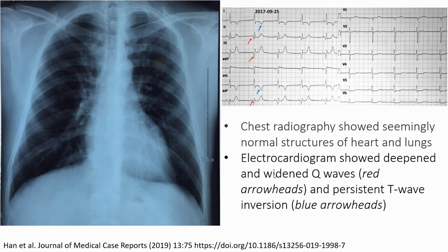This is another case of hypertrophic cardiomyopathy which has come to follow-up many times. On the radiograph, the heart looks normal size but with only a little increased pulmonary vascular marking. However, the ECG shows deep and prominent Q-waves and persistent T-wave inversion, confirming the diagnosis of hypertrophic cardiomyopathy.